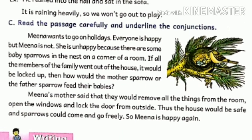Read the passage carefully and underline the conjunctions. 'Mena wants to go on holidays. Everyone is happy but Mena is not.' — 'but' is a conjunction. 'She is unhappy because there are some baby sparrows in the nest in a corner of the room.' — 'because' is a conjunction. 'If all the members of the family went out, it would be locked up. Then how would the mother sparrow or the father sparrow feed their babies?' — 'if' is a conjunction; 'or' is a conjunction.